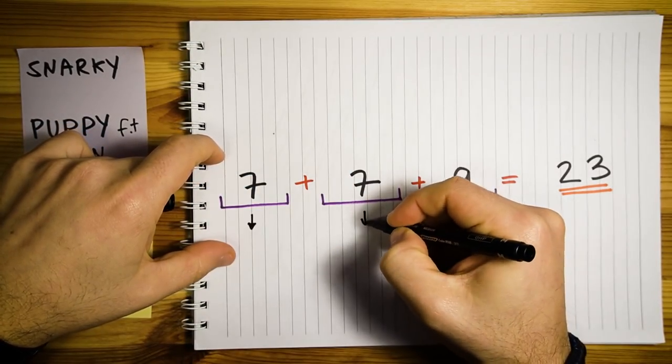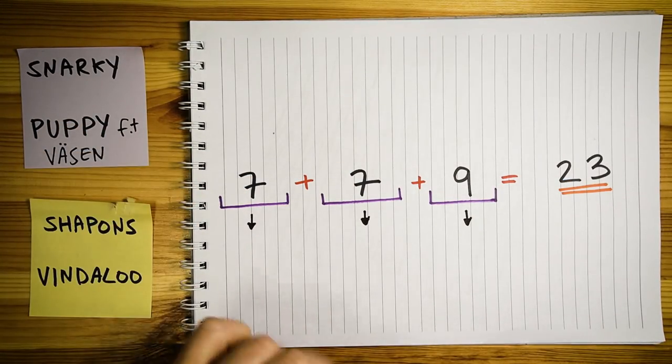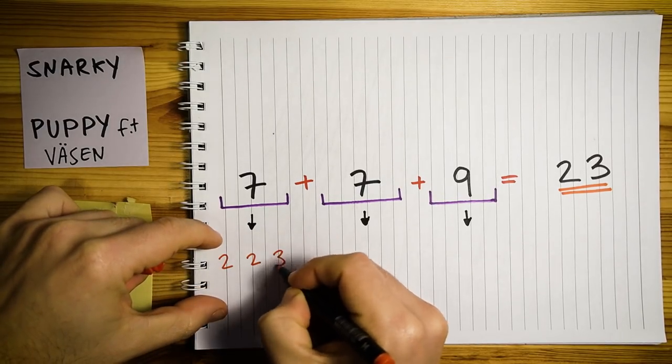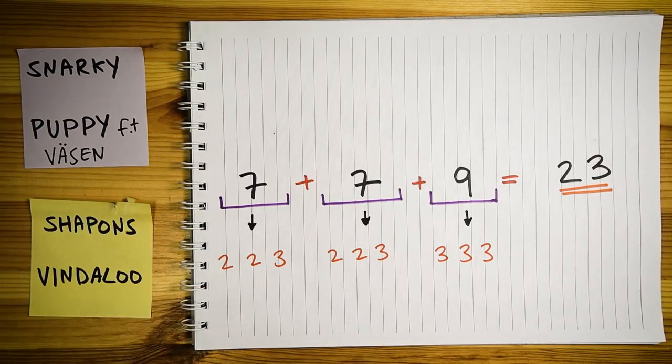And second, once you determine the internal division of these separate meters, you get the main skeleton of the clave, and the main rhythmic structure of the piece.